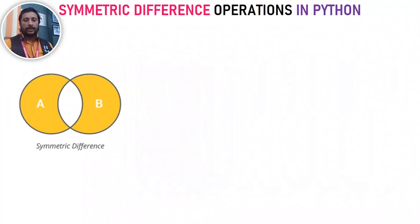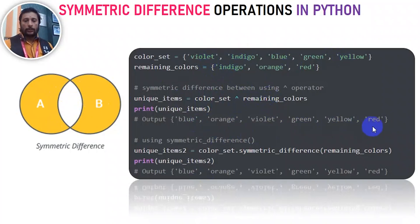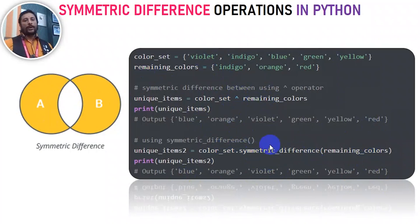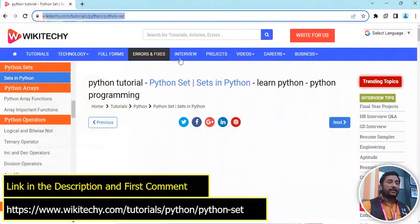Now we are going to use the symmetric difference. We use the caret ^ symbol for this. So: color_set ^ remaining_color, or color_set.symmetric_difference(remaining_color). If you use the operator or the function, you can perform all set operations. This is our set operator overview. You can find a detailed video on our website, wikidiki.com.